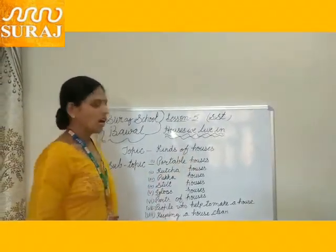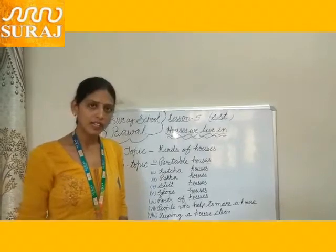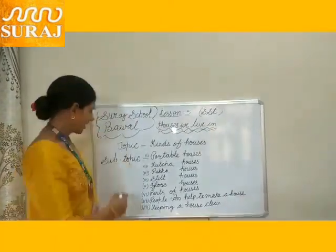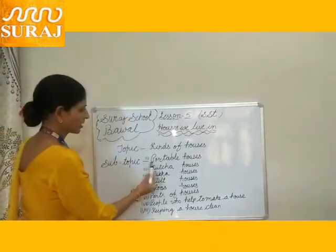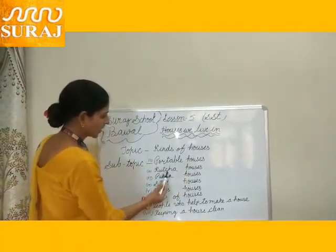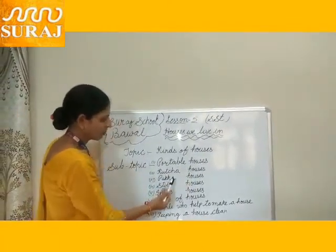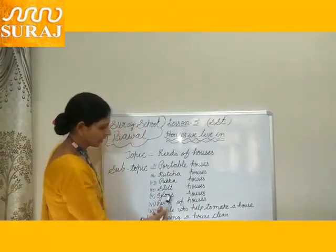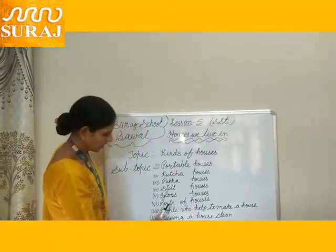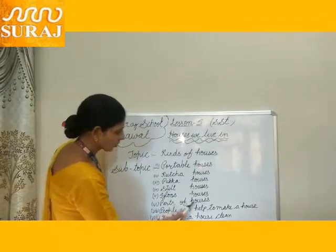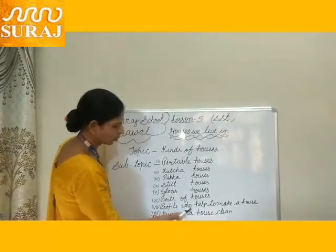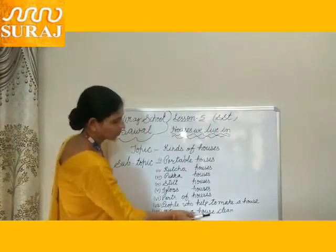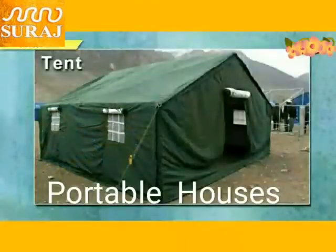Types of houses. Houses are of many kinds. People build houses according to their needs. Some topics are: portable houses, kacha houses, paka houses, steel houses, igloo houses, parts of houses, people who help to make a house, and keeping a house clean.